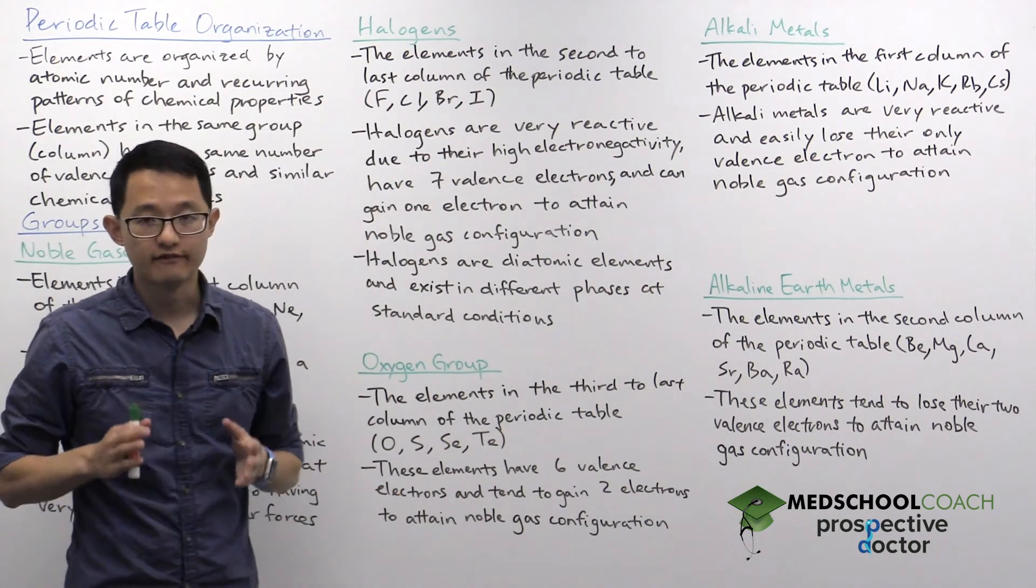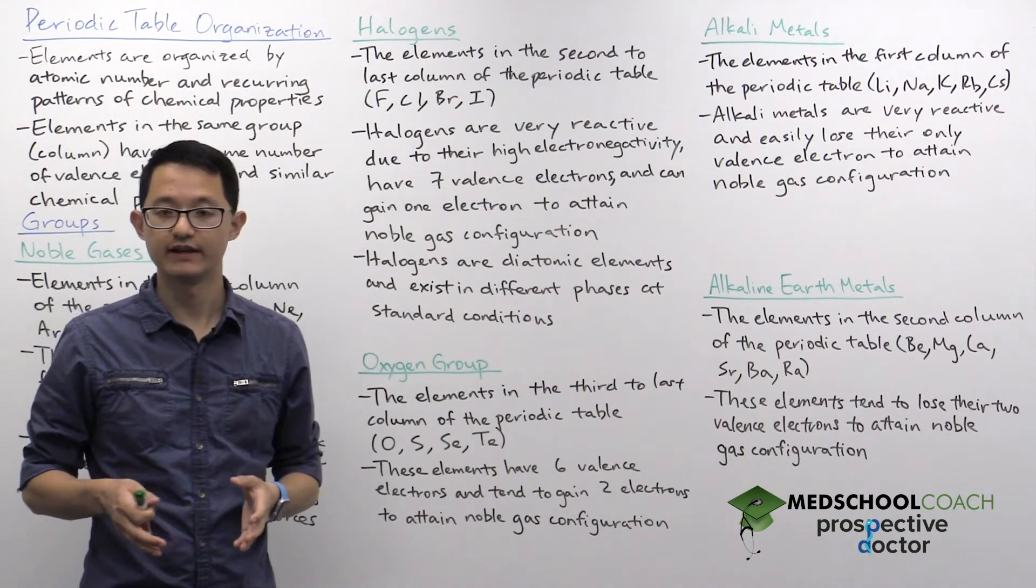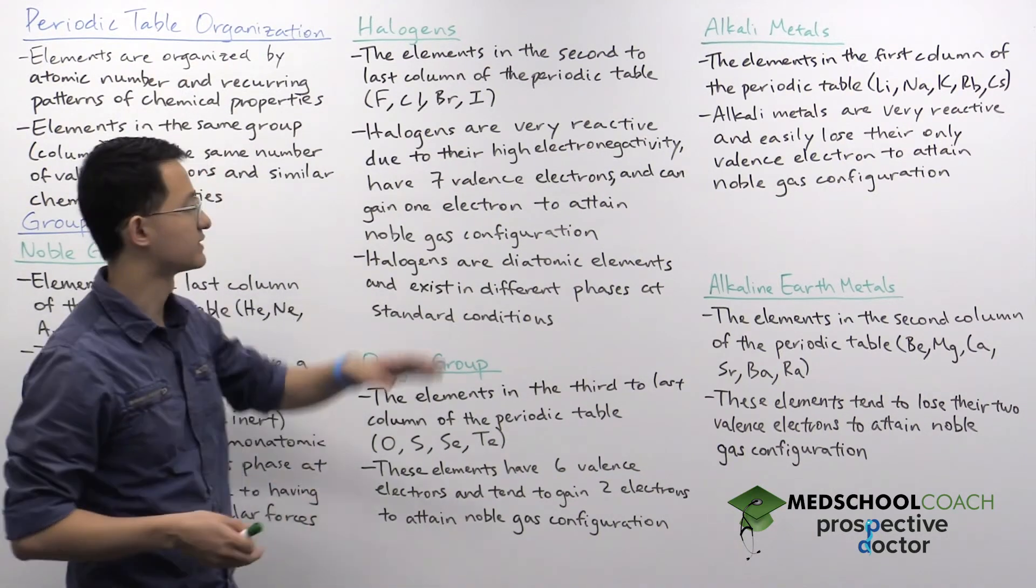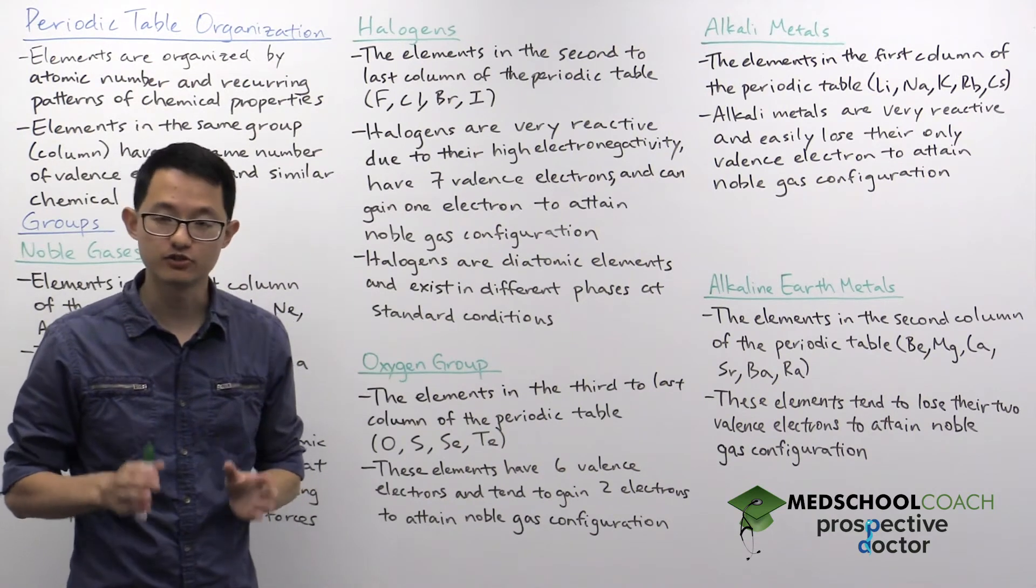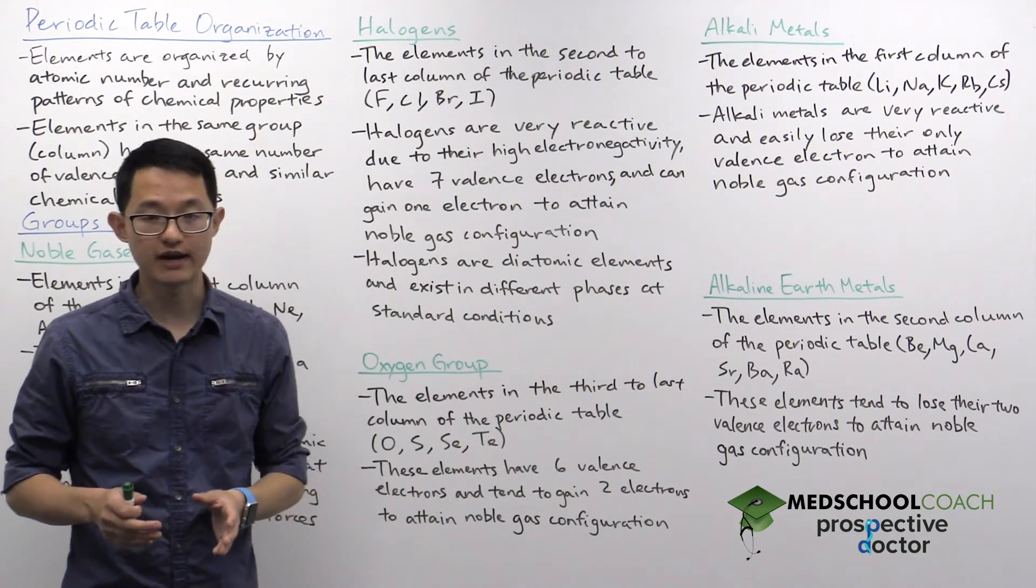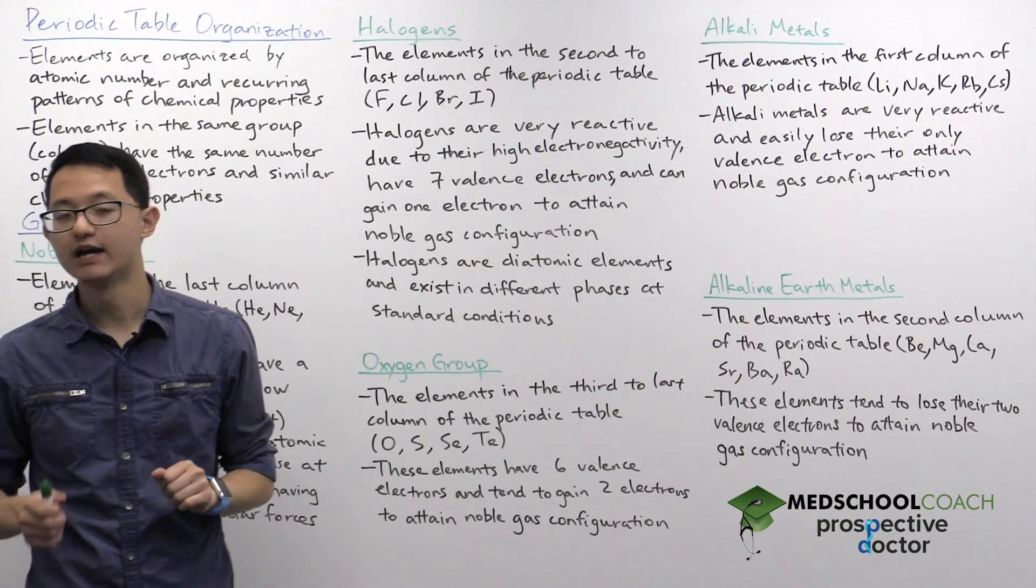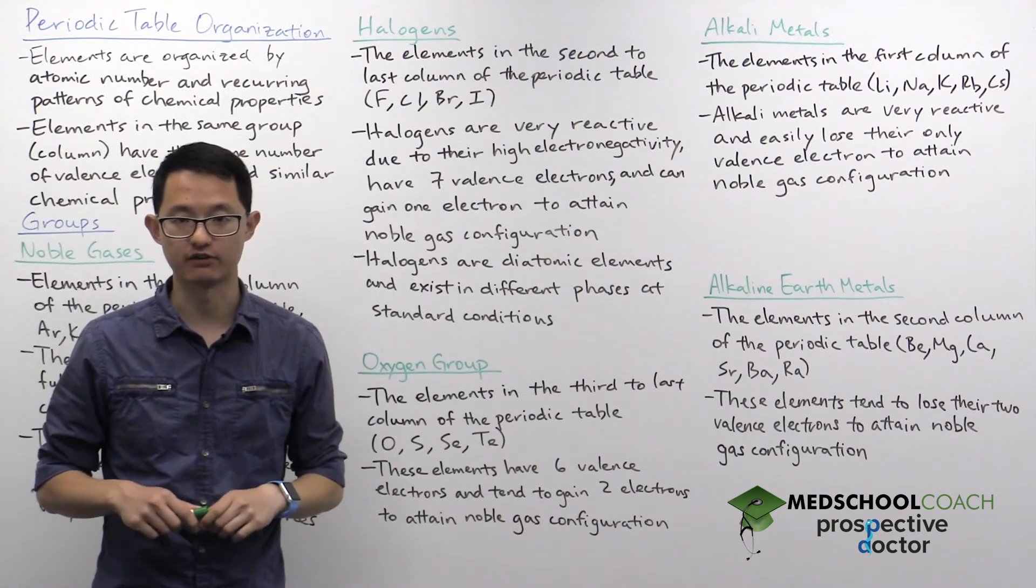And these elements are very, very reactive. And the reason why they're very reactive is because the halogens have seven valence electrons. They're super close to a valence shell. They just have to gain one more electron to attain noble gas configuration.